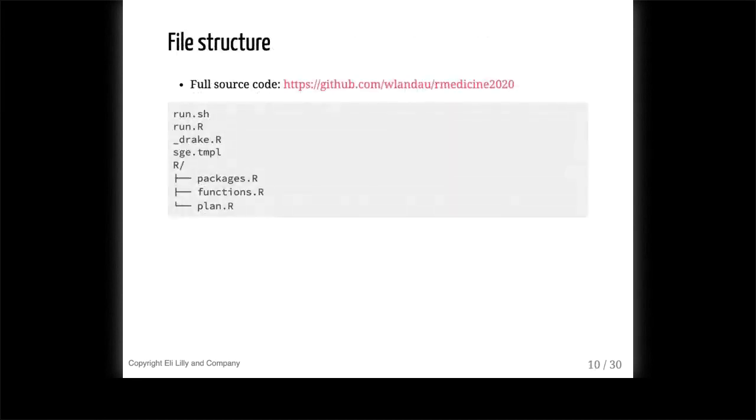So that's the background. Now, how do we implement this? Let's have a look at the file system of this project. We have R scripts to load our packages, our custom functions, and something called a Drake plan, which I'll get to later. We also have an underscore drake.r script to configure and set up the workflow at the top level, and some other top-level run scripts just for convenience. We also have an SGE template file. SGE stands for Sun Grid Engine, and this helps us distribute the workload across multiple nodes of a grid engine cluster.